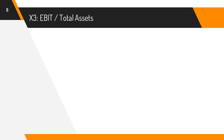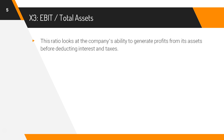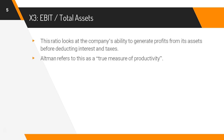X3 is EBIT divided by total assets. This ratio looks at the company's ability to generate profits from its assets before deducting interest and taxes. Altman refers to this ratio as the true measure of productivity.